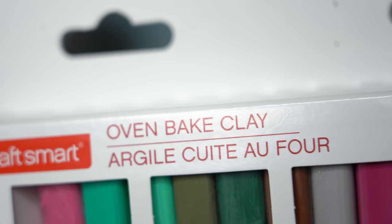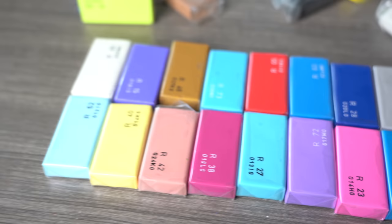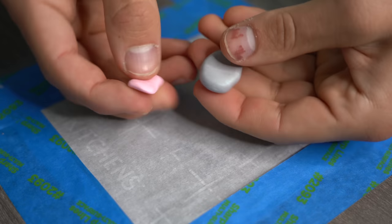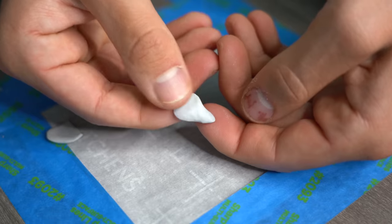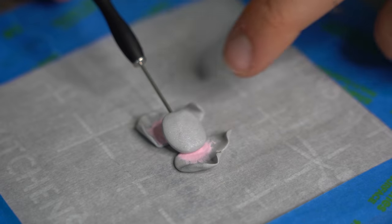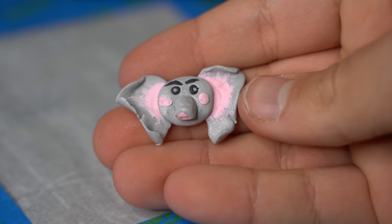All right, first off we need clay. I'm using the oven-baked good stuff. Starting off with number E, we're doing an elephant. So I made two little ears and then put pink in the middle, attached the head, poked on some eyeballs, and boom, elephant.